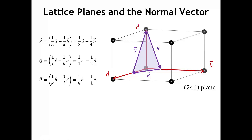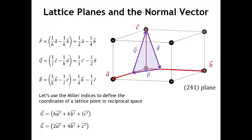An even simpler way to specify the orientation of a plane is to define the vector that is perpendicular — or normal — to that plane. I'm going to suggest that we consider the reciprocal space lattice vector whose coefficients are the H, K, L Miller indices. In this case, that would be the vector G: two times A-star, plus four times B-star, plus C-star. If you're unsure what I mean by reciprocal space lattice vectors, please see the previous lecture. Now let's look at the orientation of this vector with respect to the P, Q, and R vectors we defined.